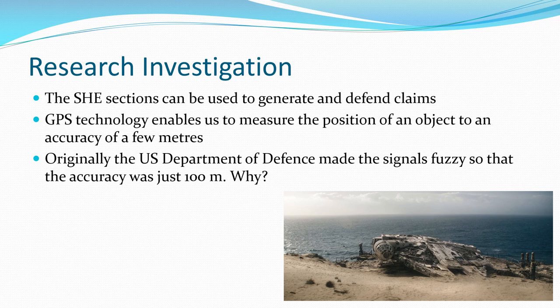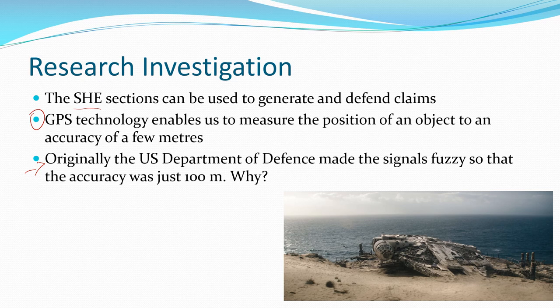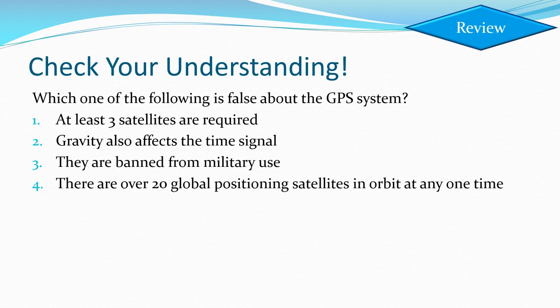Think about your research investigation — the science as a human endeavor section. GPS technology is quite topical. Originally the US Department of Defense developed the GPS satellite system and made the signals deliberately fuzzy so accuracy was only 100 meters — they wanted the military advantage. Eventually they switched off that built-in inaccuracy and we get much better accuracy today. But as it is a defense system they could turn the inaccuracy back on at any time.